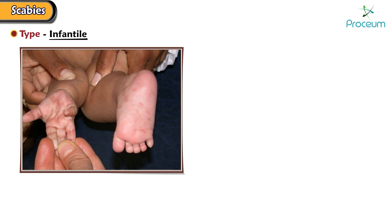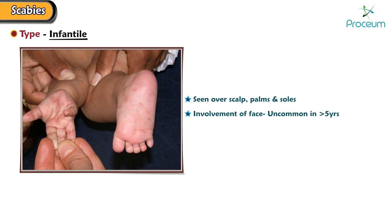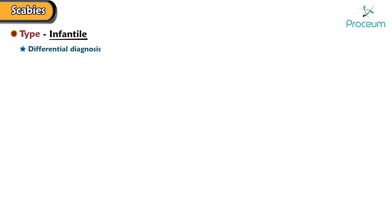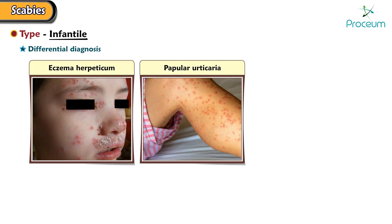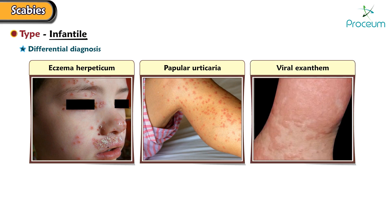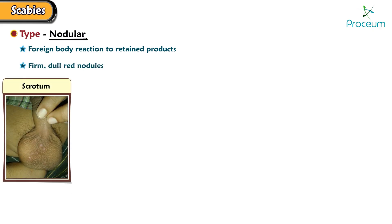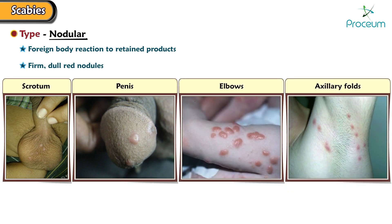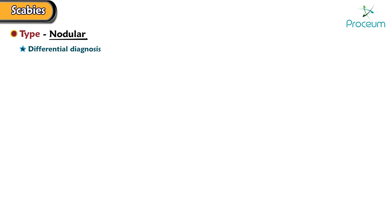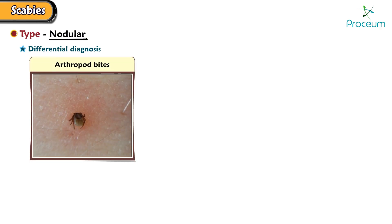For infantile scabies, lesions can be seen over the scalp, palms, and soles. Involvement of the face is uncommon in people older than 5 years. Differential diagnosis of infantile scabies include eczema herpeticum, papular urticaria, and viral exanthem. For nodular scabies, this type is due to a foreign body reaction to retained products. Firm, dull, red nodules are seen over the scrotum, penis, elbows, and axillary folds. Differential diagnosis include arthropod bites and pseudolymphoma.